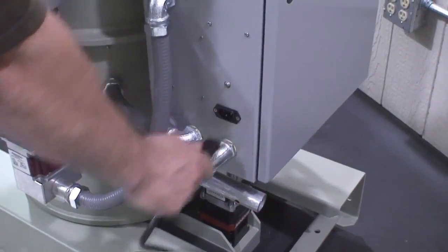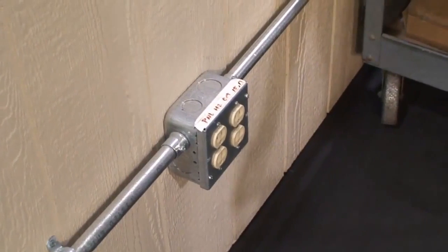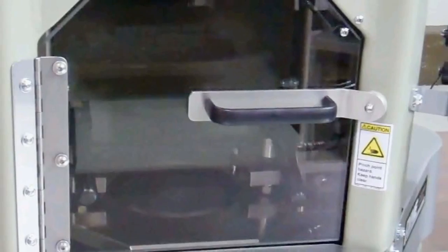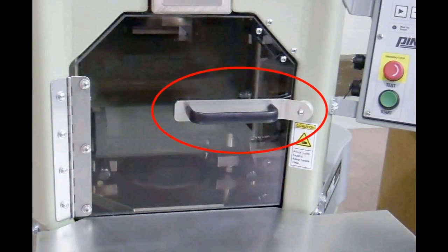First, unplug the power cord from the G2 and from the wall outlet just to be safe. First thing we'll do is install the door. We have to remove the old door from the G2, but we want to save the handle and the magnetic safety switch actuator because we'll use these on the new door.